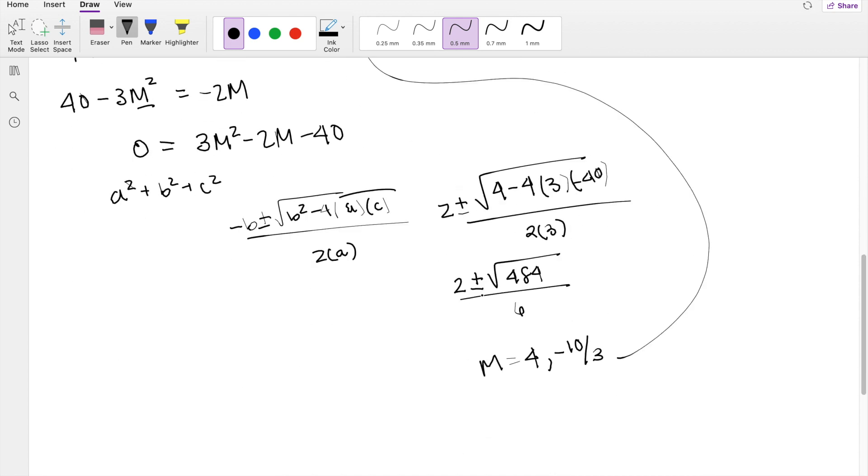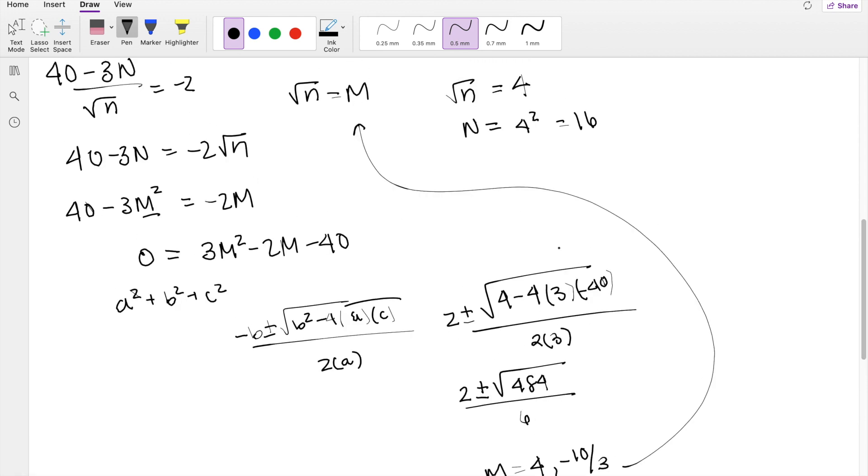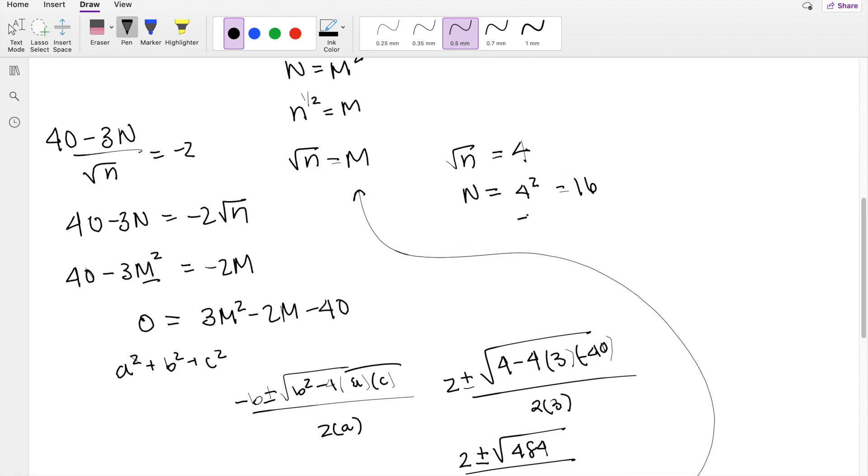And likewise, that's one of the reasons why we didn't reject negative 10 over 3, because when you square a negative, negative 10 over 3 does become a positive, so we can't reject it just because it's a negative. So we have these two numbers.